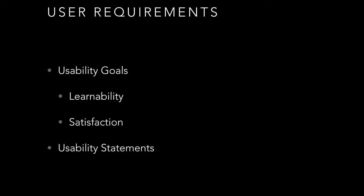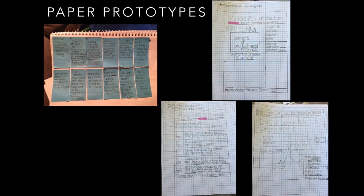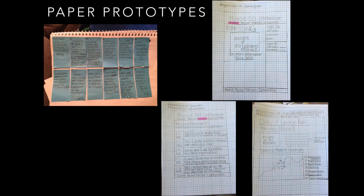After we created our user requirements, it was time to move into creating our paper prototypes. By taking our user requirements and our storyline, we started to map out how our story was going to be told using a storyboard. You can see at the upper left-hand corner an example of our storyboard.